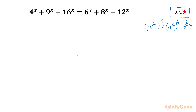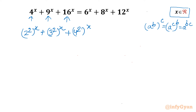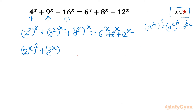Now I will write 4 as 2², 9 as 3², and 16 as 4². So we will be writing (2²)^x + (3²)^x + (4²)^x on the left-hand side. Using the exponent property, I will swap the powers to get (2^x)² + (3^x)² + (4^x)².